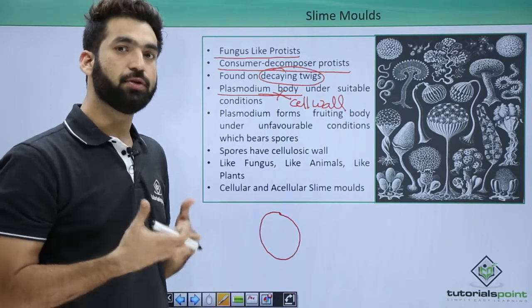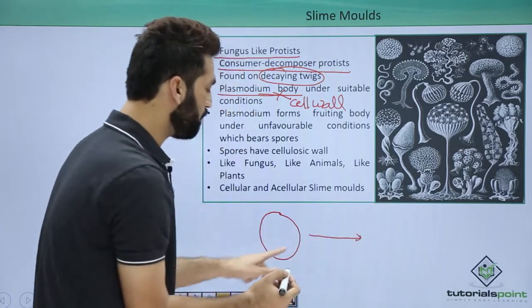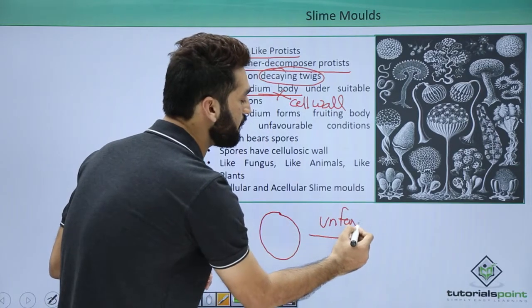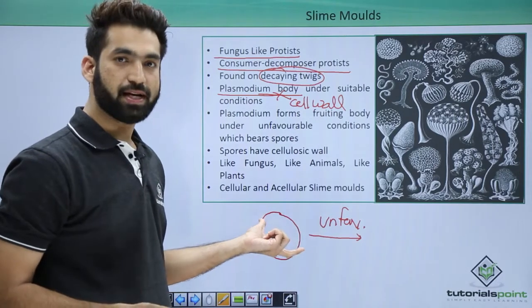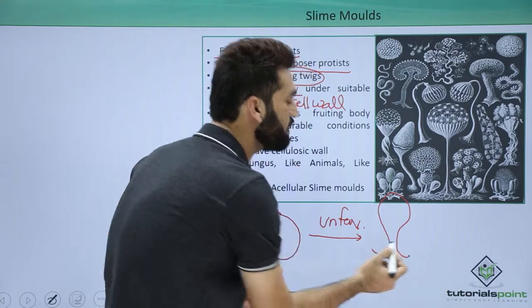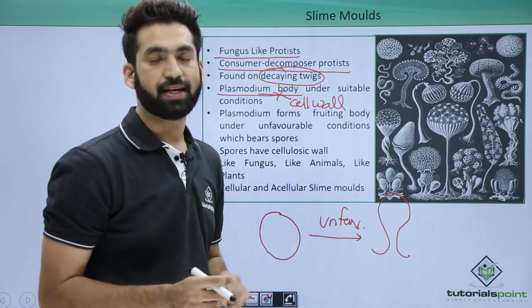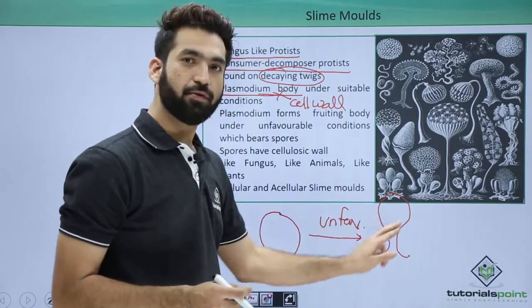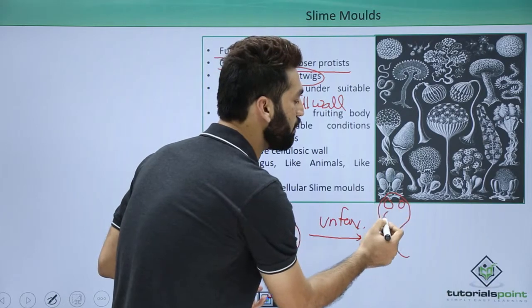During unfavorable conditions, the plasmodium body faces stress and forms a shape which is the fruiting body. The fruiting body is present in the life cycle of fungus — that is why they are called fungus-like protists. So in unfavorable conditions, the plasmodium body transforms into a fruiting body.